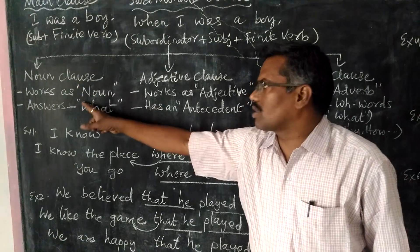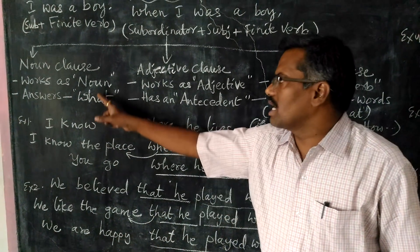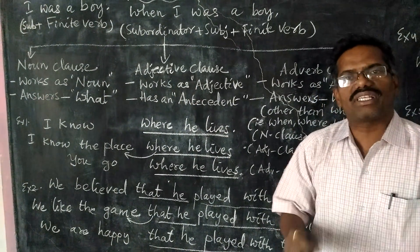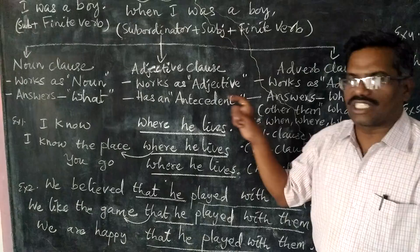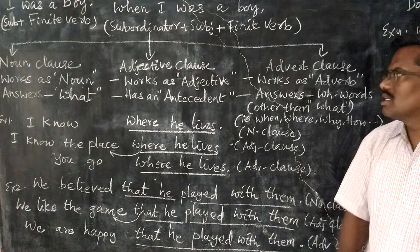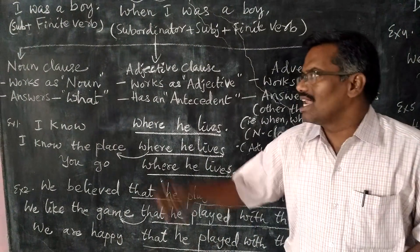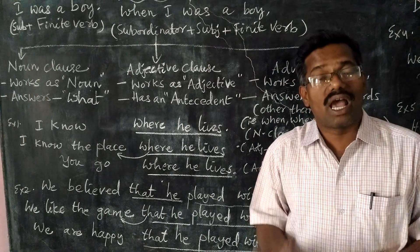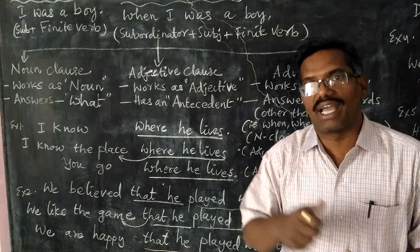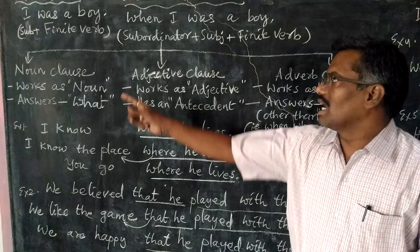Noun clause is the clause which does the work of a noun. Adjective clause is a clause which does the work of an adjective. Adverb clause is a clause which does the work of an adverb. If we teach only like this, our children may not be in a position to identify it. So some clues are there for each clause.